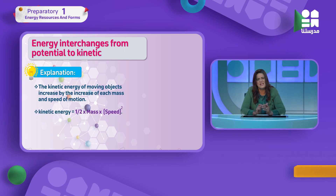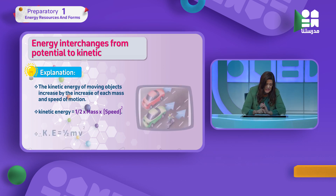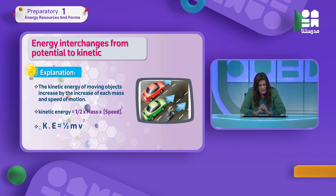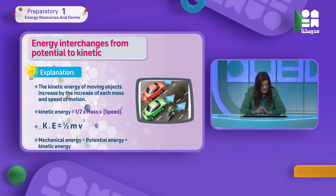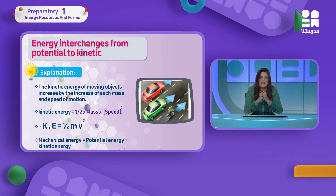The kinetic energy formula is: KE = half times mass times speed squared (KE = ½mv²). Speed is measured in meters per second and mass in kilograms. Mechanical energy is the sum of potential energy and kinetic energy. So: mechanical energy = potential energy + kinetic energy.